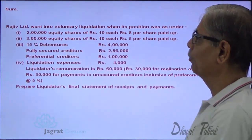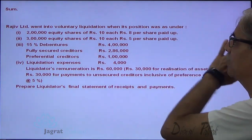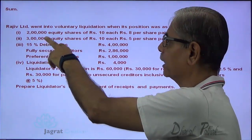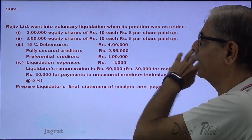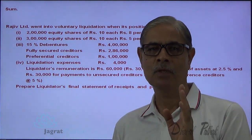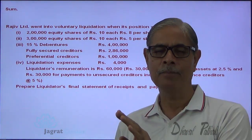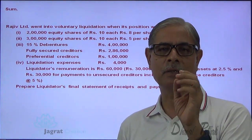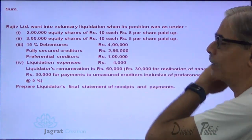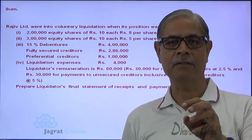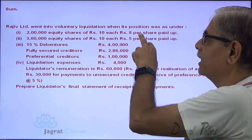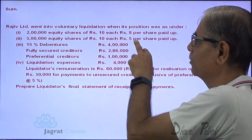Rajiv Limited went into voluntary liquidation when its position was as under. There are 2 lakh equity shares, face value 10, at 8 per share paid up, so 80% of the share capital is paid up. And 3 lakh equity shares, face value 10, at 5 per share paid up, so another equity share which is 50% paid up.